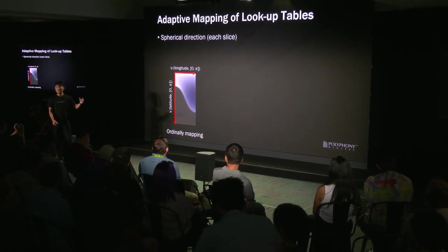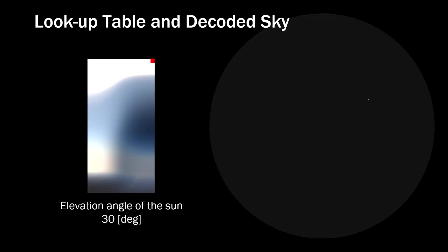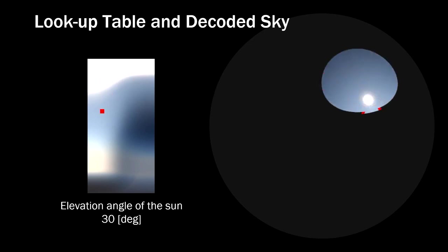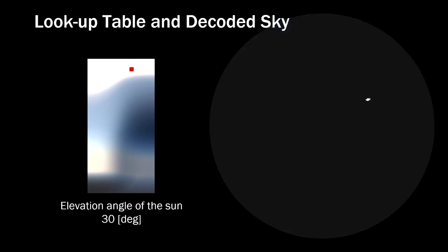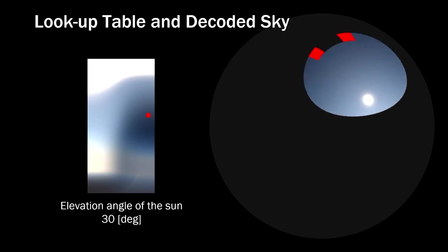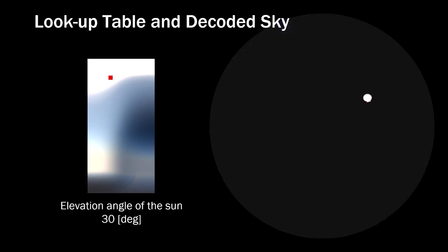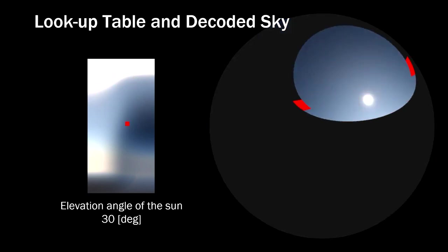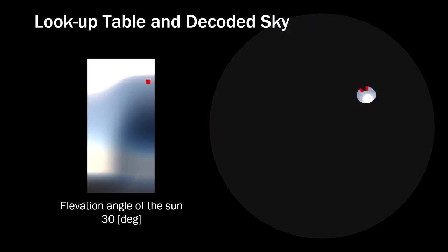An ordinary latitude-longitude mapping is used as the base, with horizontal normalization applied and a nonlinear adaptive transformation of the V coordinates. This video shows how the look-up table is mapped to the sky and decoded. The left image is the look-up table slice, and the right image is the decoded sky. There is more texel density around the sun and near the horizon, and the overall mapping is very nonlinear.